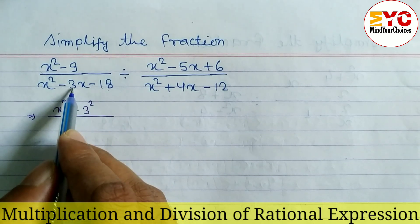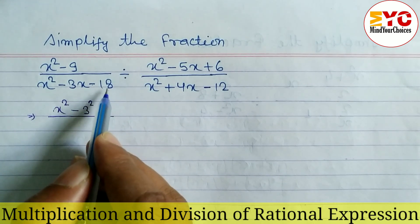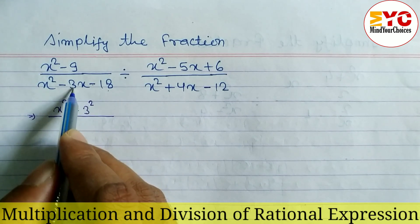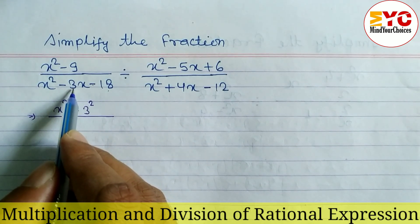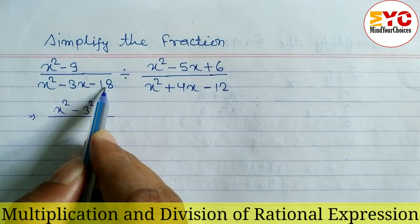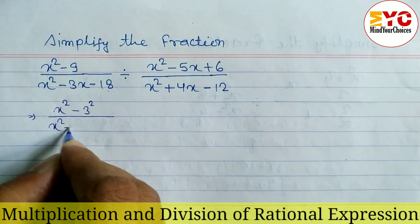In the denominator we have to factorize. We are multiplying to get 18 and subtracting to get 3, so we need to find factors whose product is 18 and whose difference is 3. The factors are 6 and 3, since 6 times 3 is 18 and 6 minus 3 is 3.